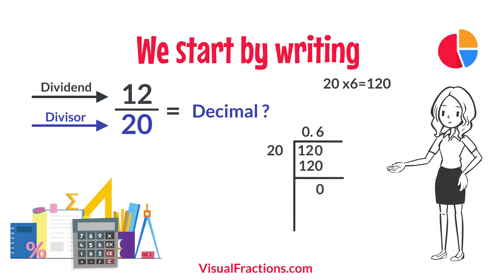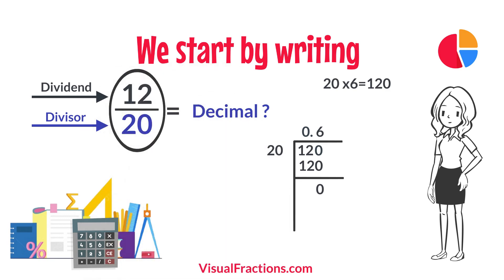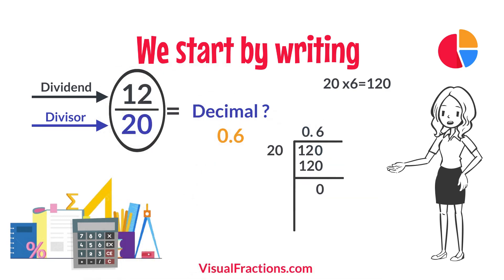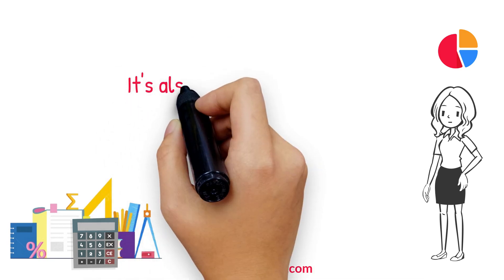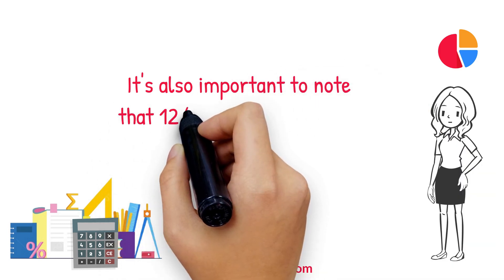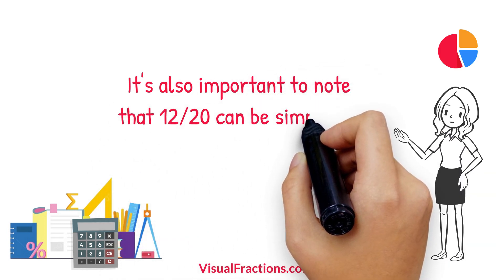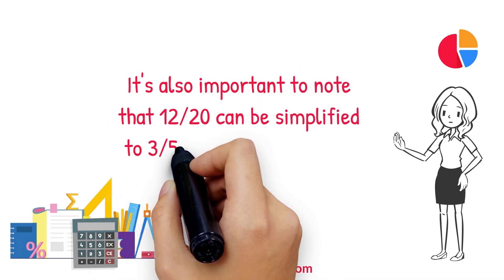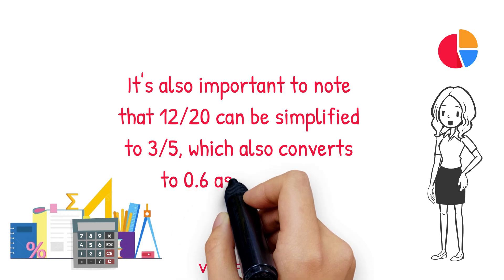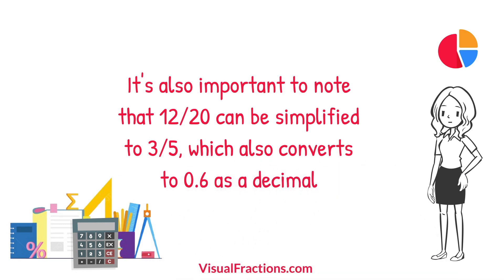So, there we have it. The fraction 12 twentieths converted to a decimal is 0.6. It's also important to note that 12 twentieths can be simplified to 3 fifths, which also converts to 0.6 as a decimal.